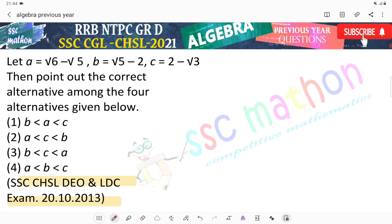Let A equals root 6 minus root 5, B equals root 5 minus 2, C equals 2 minus root 3. Then, point out the correct alternative among the 4 alternatives given below.